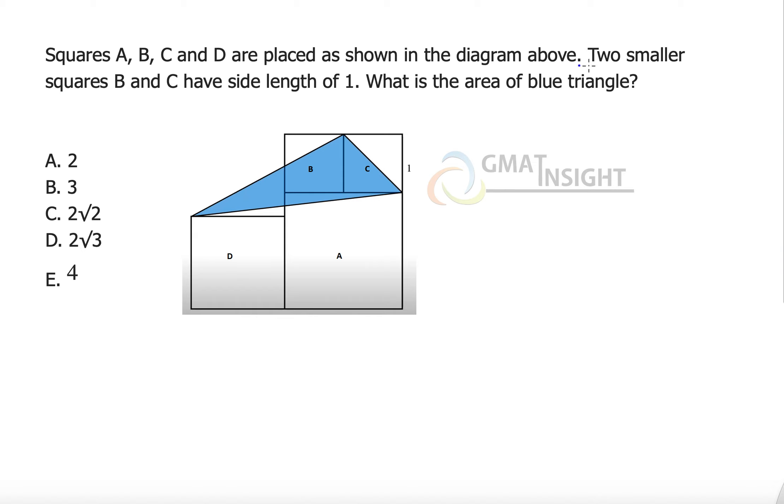Squares A, B, C and D are placed as mentioned in the figure. The two smallest squares B and C have side length 1. So here the lengths are 1 unit each, that means square A has the side length of 2 units each.